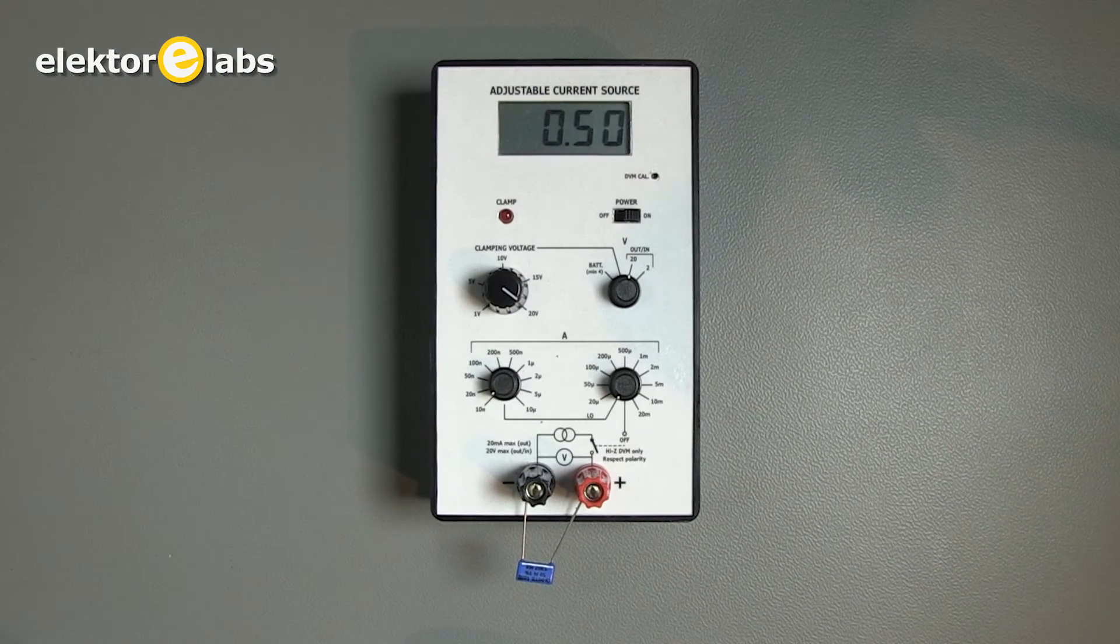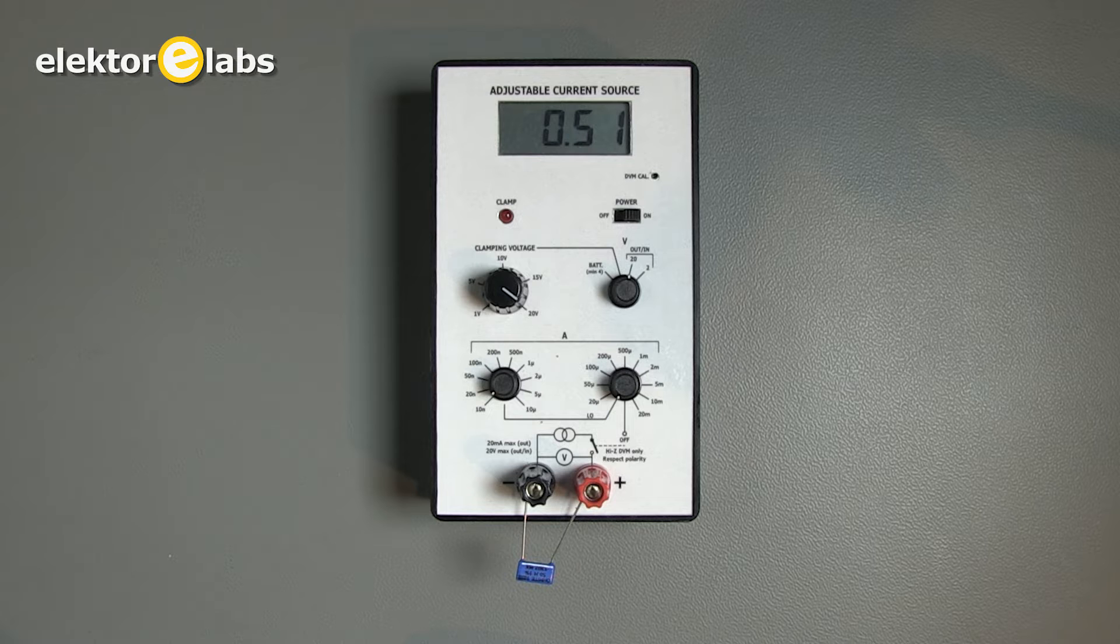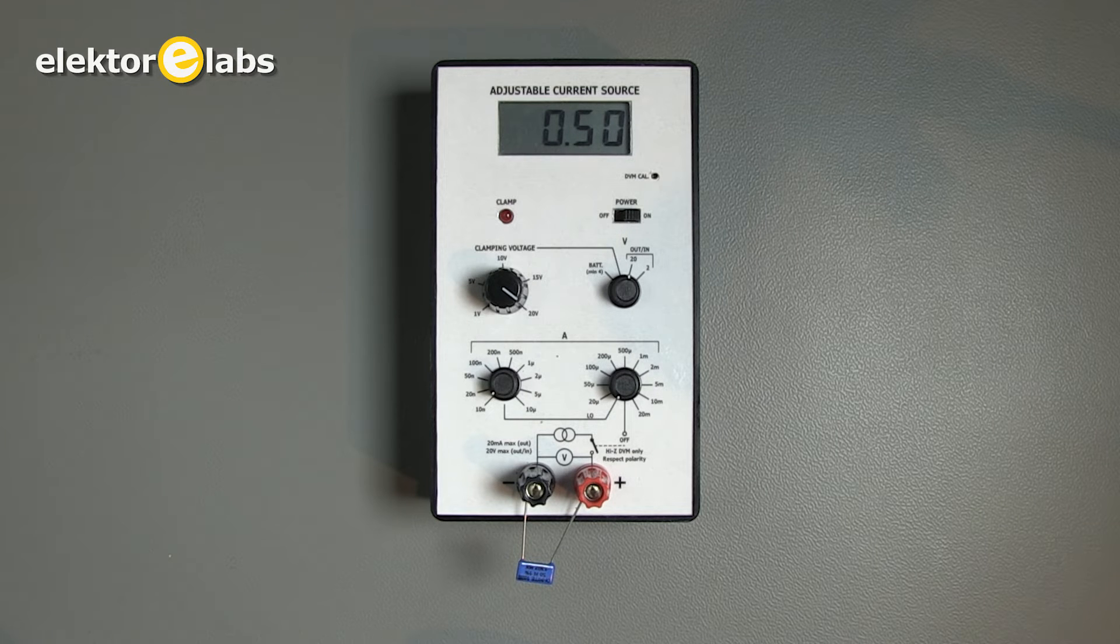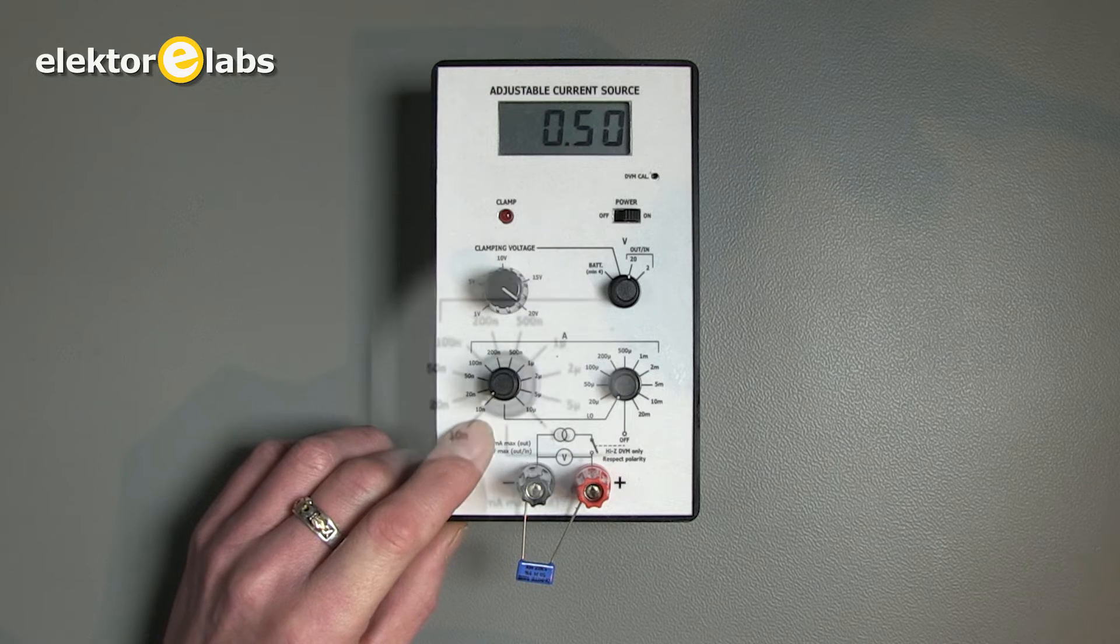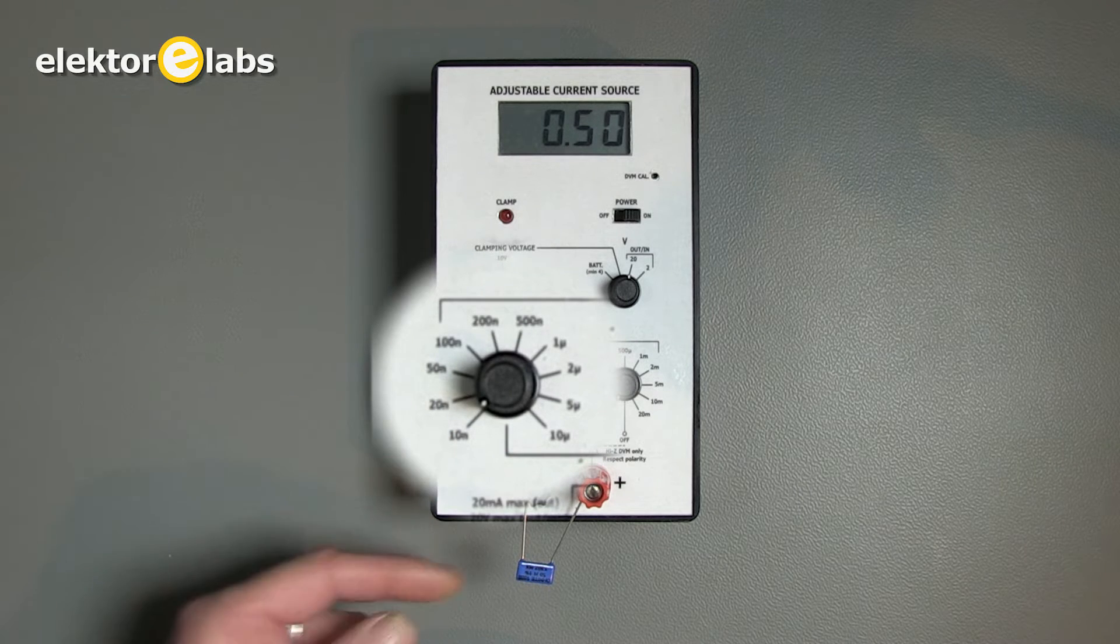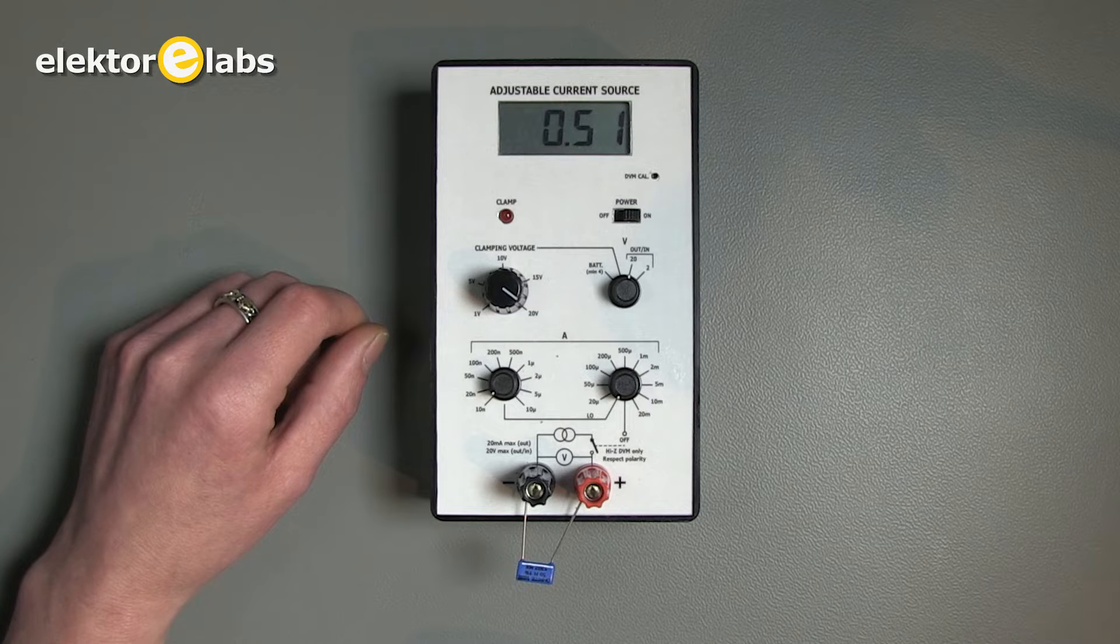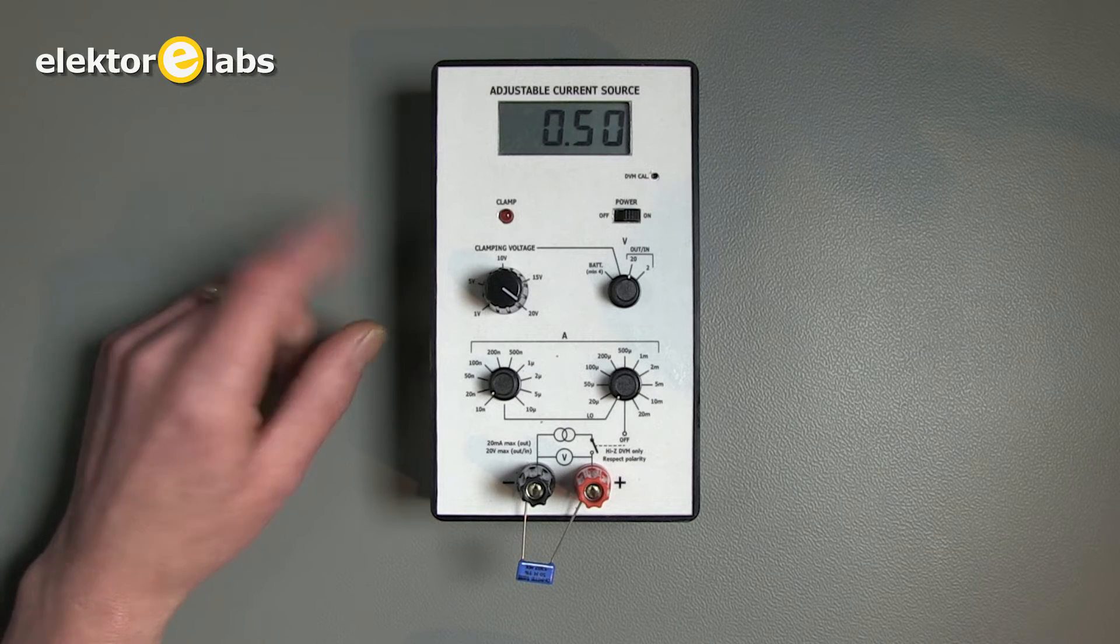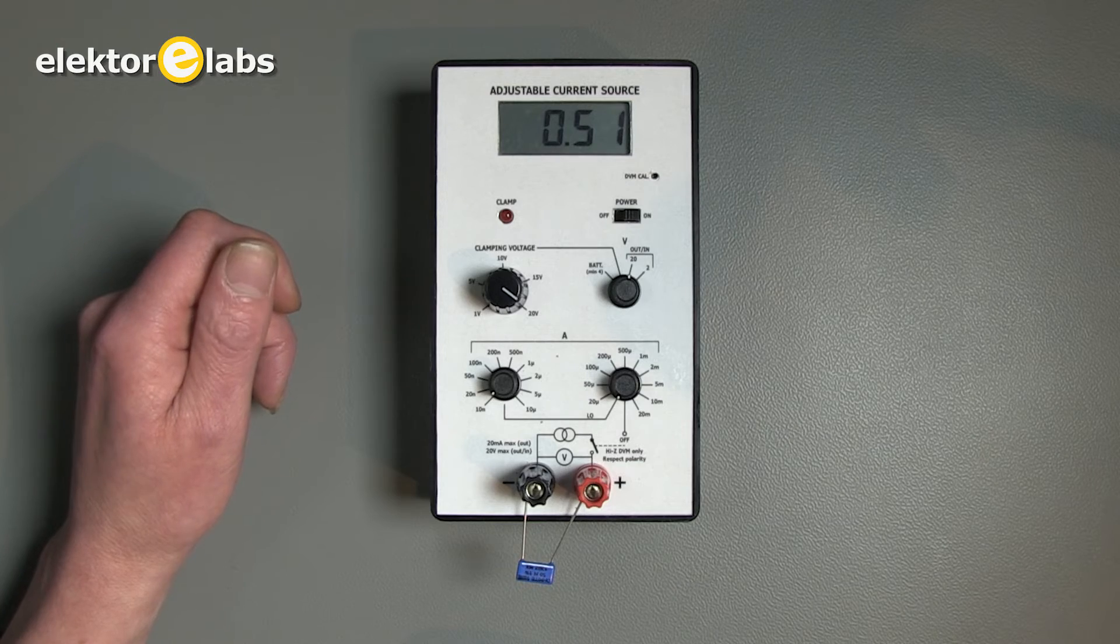In this measurement, the instrument is used to measure resistance of 50 megaohm. If we put the instrument at 10 nanoampere, you can see that there's 500 millivolts across. So the reading of the voltage meter equals 1 volt per megaohm.